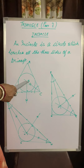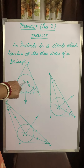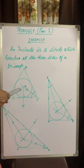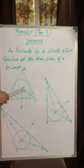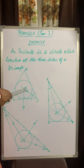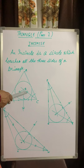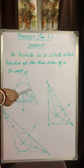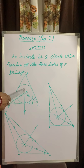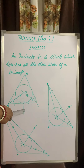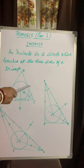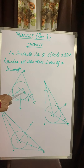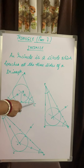Drawing two angle bisectors is enough for getting the in-center. From the in-center, to get the radius of the in-circle, we have to draw a perpendicular to any one of the sides. Here we have drawn the perpendicular to side BC.